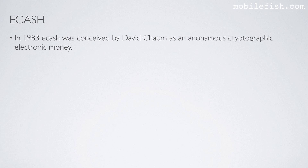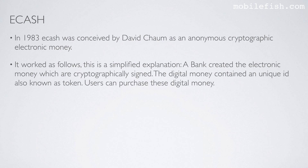In 1983, eCash was conceived by David Chaum as an anonymous cryptographic electronic money. A bank created the electronic money, which is cryptographically signed. The digital money contains a unique ID, also known as a token.